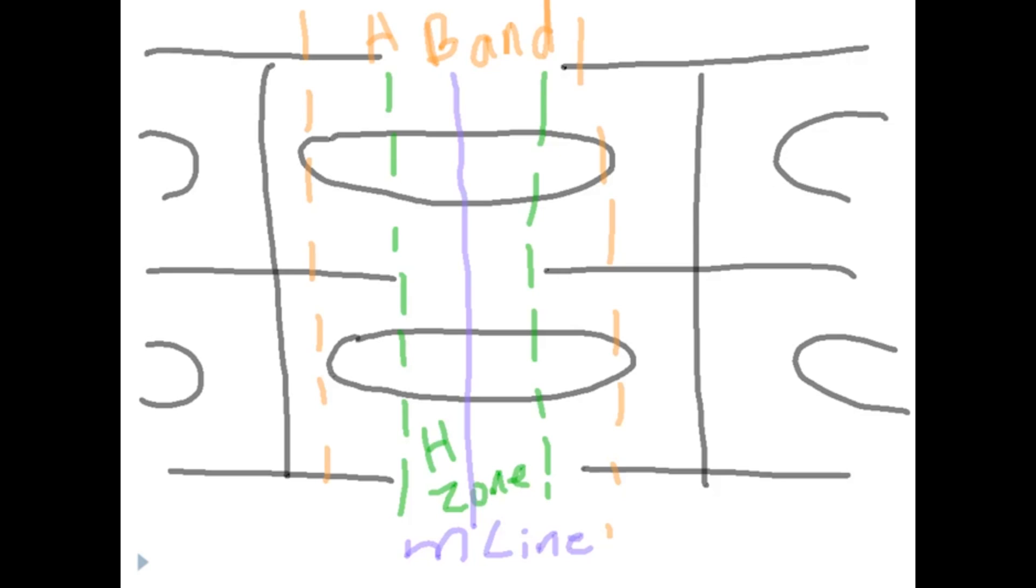Then we also have to have something that doesn't like any of the thick filaments. Doesn't like it. Doesn't want any part of it. And that is going to be our I band. Now for a second, take a look at the letter I. The letter I. The letter I is pretty thin. Thin only. Look at the I. It's all thin. Thin only.